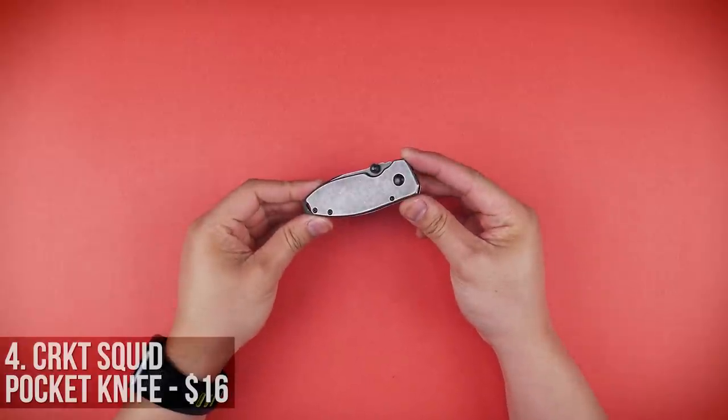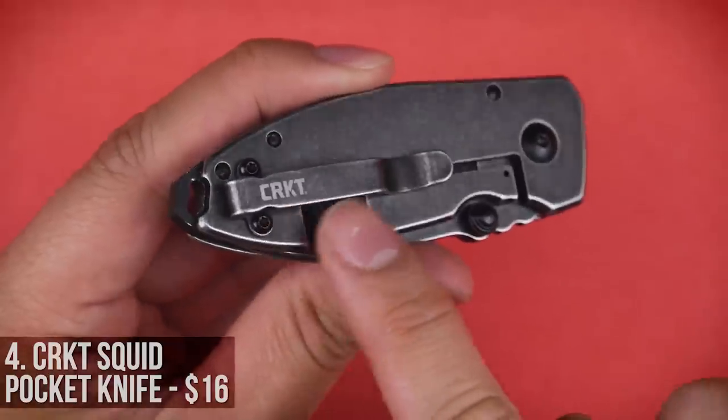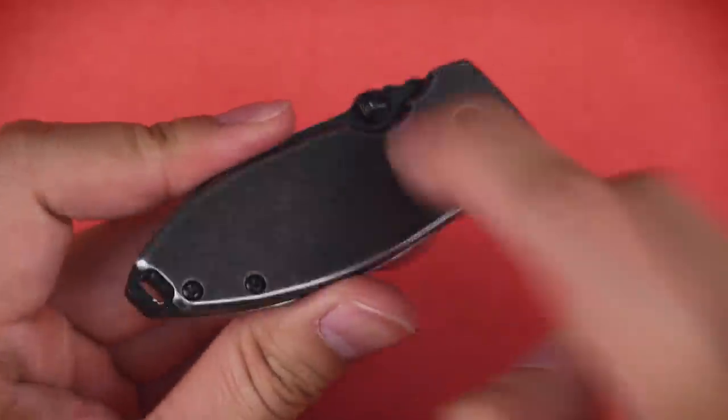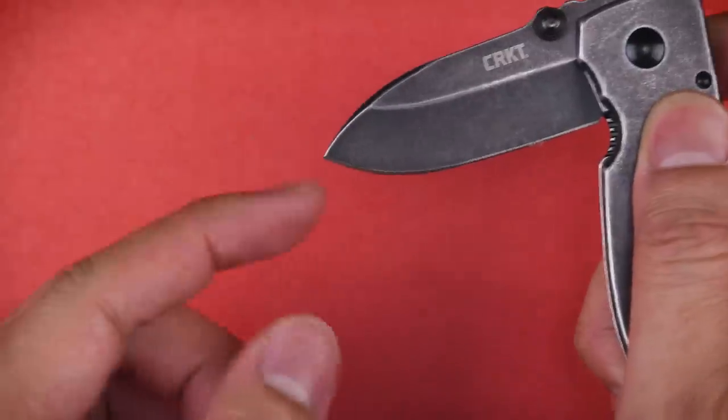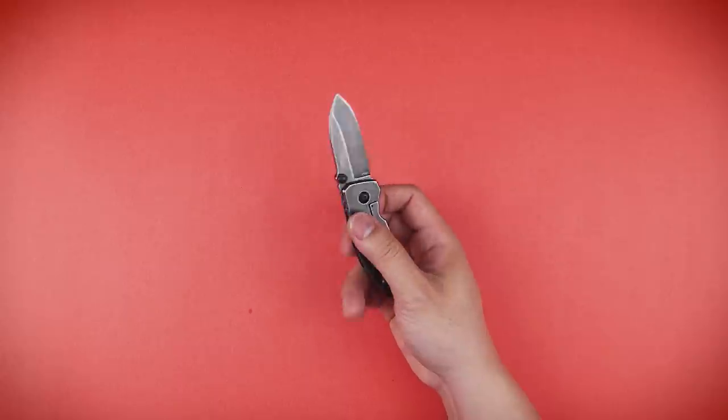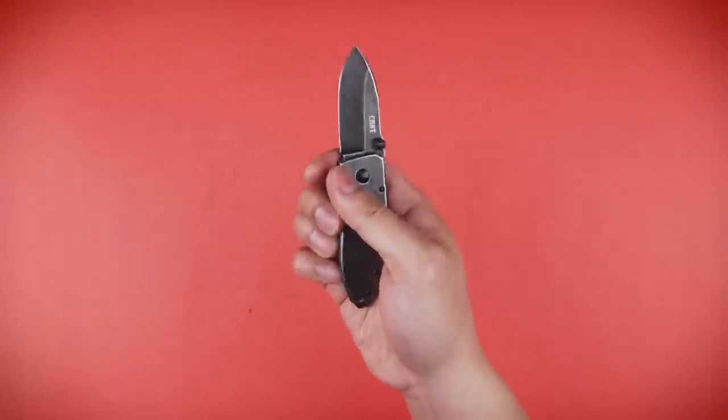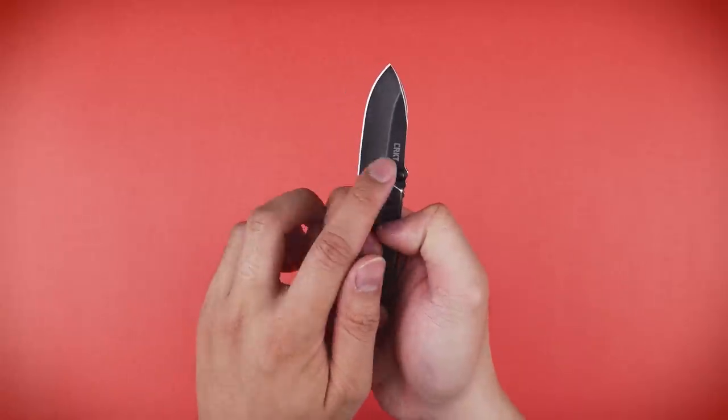Next, a mini knife that will catfish you when thinking it's bigger than it is. The CRKT Squid Pocket Knife in this wicked black stonewash packs a 2.25 inch blade, it's almost an inch wide, sharper than a fifth grader, and designed by the infamous Lucas Burnley. It's ergonomically designed, the thin but sturdy frame offers great grip even at such a small size.